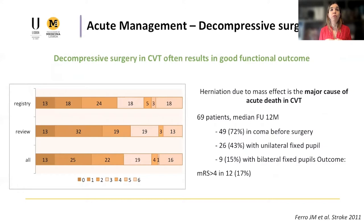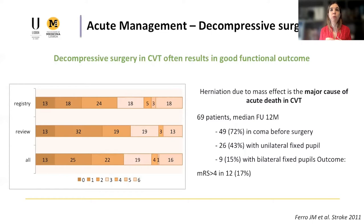For patients with severe CVT, we have to consider a few more interventions in the acute phase. The main cause of acute death in patients with CVT is brain herniation, and in these patients, decompressive surgery should always be strongly considered — even if the patient presents with a severe clinical picture with coma or with unilateral or bilateral fixed pupils. This retrospective analysis including systematic review and registry data shows that even in this group of patients, very few are left with severe disability, and the prognosis at 12-month follow-up is quite good — a different situation from patients with ischemic stroke.